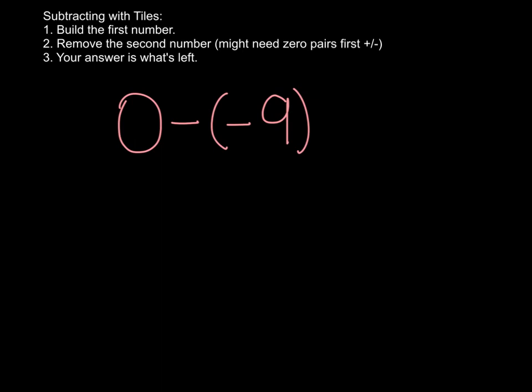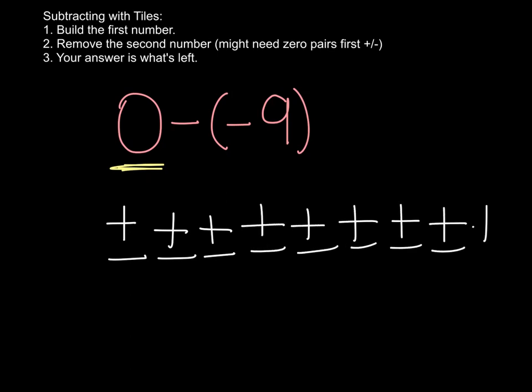All right, how about this one? We have 0 minus negative 9. So my first step is to build the first number. Well, how do I build 0? Let's make a neutral field or a bunch of 0 pairs. If you're not sure how many you're going to need, just take a look over here at this second number, because remember, we're going to be needing to take away 9 negatives. So I think it'd be a good idea to start with 9 0 pairs. So I'm going to go 1, 2, 3, 4, 5, 6, 7, 8, and 9.